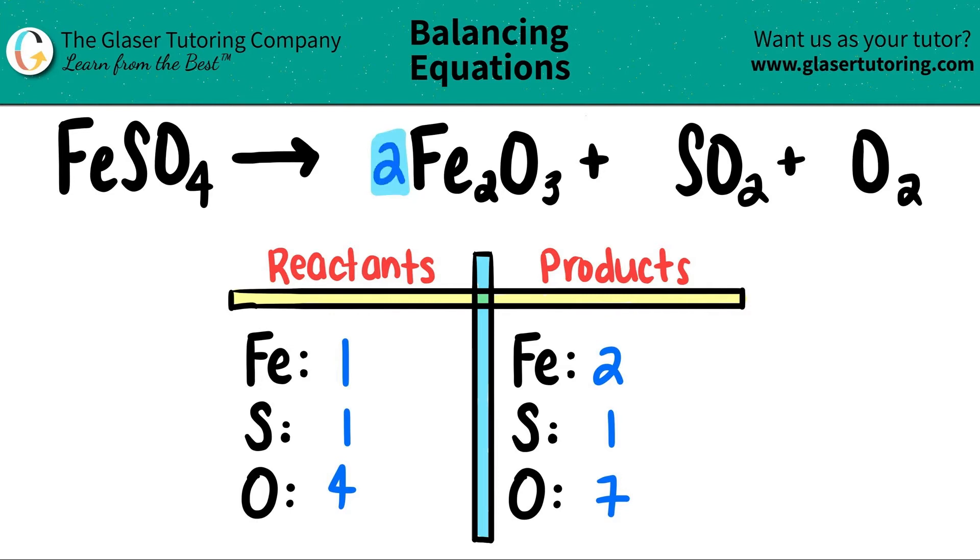So I'm going to put a two here. But I have to be fair. Whatever I do, I have to distribute between the two elements. So in this case, the iron and the oxygen are going to change, which is totally okay. So for the iron, I have two times two, I now have four iron.